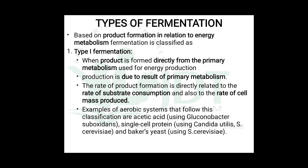Fermentation is also classified based on another criterion — the relationship between product formation and energy metabolism — into three types: Type 1, Type 2, and Type 3. In Type 1 fermentation, the product is formed directly from primary metabolites used for energy production. The rate of product formation is directly related to the rate of substrate consumption and the rate of cell mass production. Examples include acetic acid production using Gluconobacter suboxidans, single cell protein using Candida utilis and Saccharomyces cerevisiae, and baker's yeast using Saccharomyces cerevisiae.